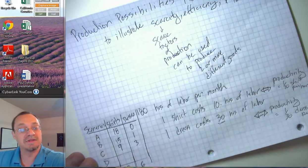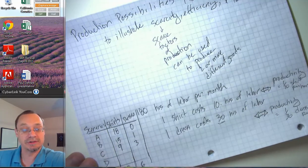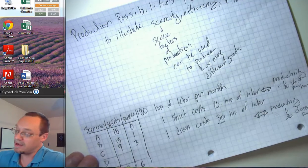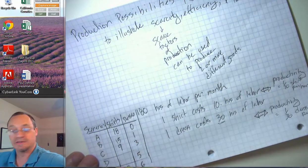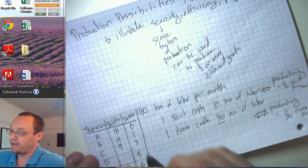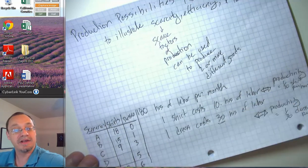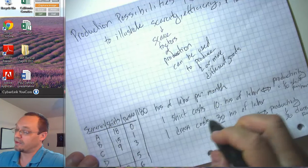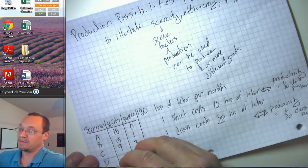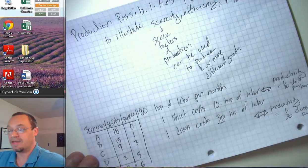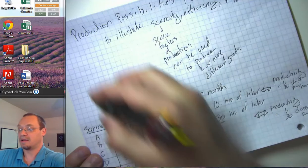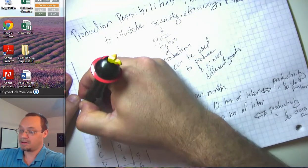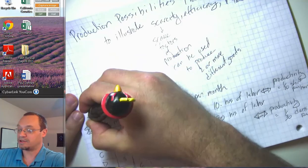If we decided to produce 5 dresses, then 5 times 30 would take 150 of our hours, leaving 30 hours left over for shirts, which would give us 3 shirts. That's scenario D. So we can go ahead and draw a picture here.